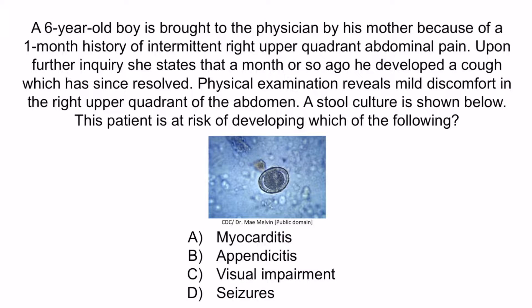Myocarditis is suggestive of Toxocara canis, but this does not cause Loeffler syndrome and isn't typically associated with biliary colic, so A is incorrect. Visual impairment can be caused by several parasites such as Toxocara canis, Onchocerca volvulus, and Loa loa, but these aren't associated with biliary colic and don't cause Loeffler syndrome, so C is incorrect. Seizures are suggestive of Toxocara canis or Taenia solium, but these do not cause biliary colic or Loeffler syndrome, so D is incorrect. The correct answer is B — appendicitis. With that, we've covered everything you need to know about Ascaris lumbricoides.